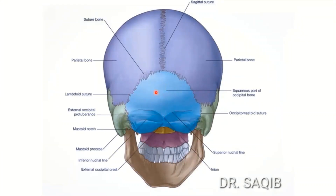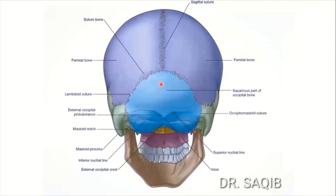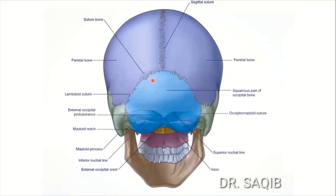The boundaries of norma occipitalis: anteriorly — the parietal bones; laterally — again the parietal and mastoid bones; posteriorly — the occipital bone. The component bones are parietal, occipital (squamous part), and mastoid. Occasionally, a Wormian bone can also be present.